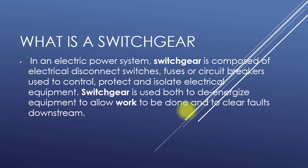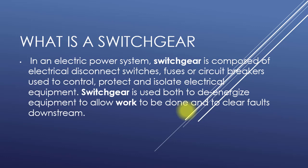Switchgear is used to control, protect, and isolate electrical equipment. It is used both to de-energize equipment to allow work to be done and to clear faults downstream. Basically, switchgear is used at medium voltage levels — 11 kV, 33 kV, or 40 kV — for power distribution and transmission purposes.